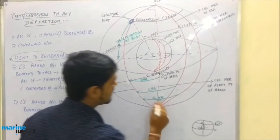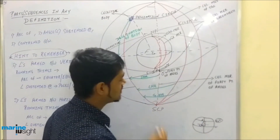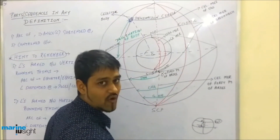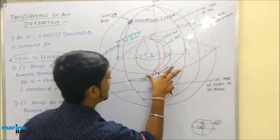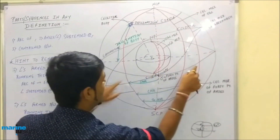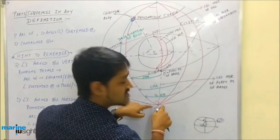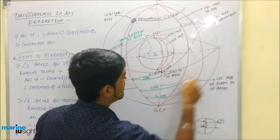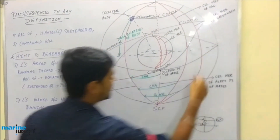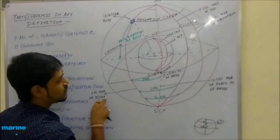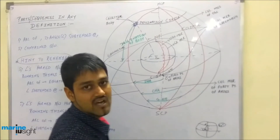GHA — its name itself clears out half the definition: it starts from Greenwich. GHA can be defined as: arc of the equinoctial or angle at the celestial poles, contained between the celestial meridian of Greenwich and that of the body, measured westerly from Greenwich.